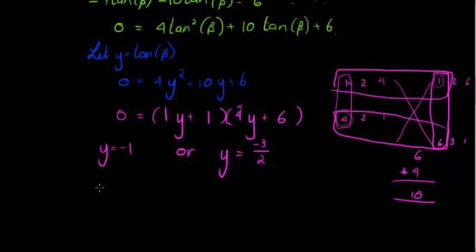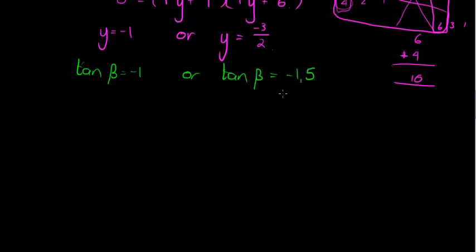And now I find that I now either have tan of β is equal to negative 1, or tan of β is equal to negative 1.5. Now for sine and cos we would have immediately said there is no solution to this one, because sine and cos can't be greater or smaller than negative 1 or greater than 1, but tan can be. Tan can be, so we find our reference angle in our next step.